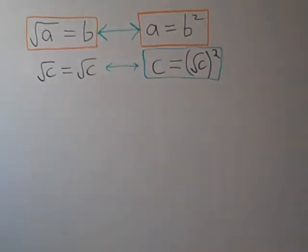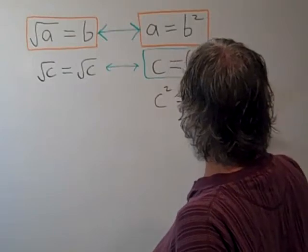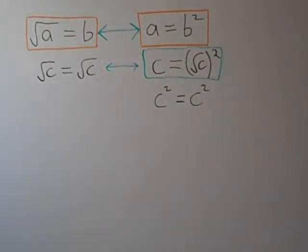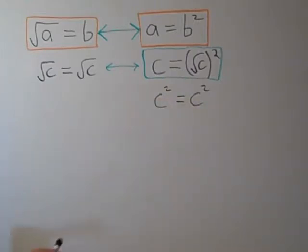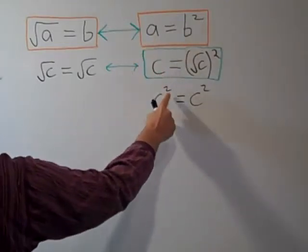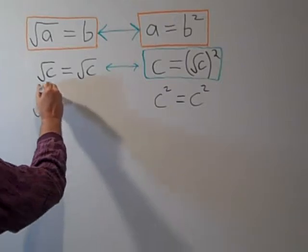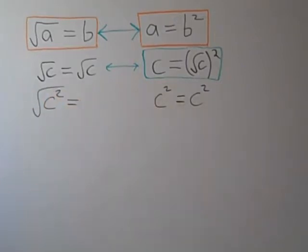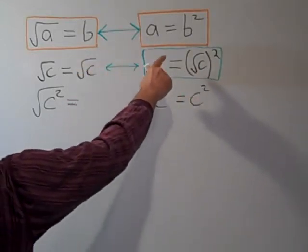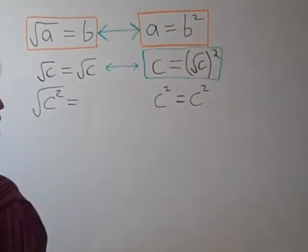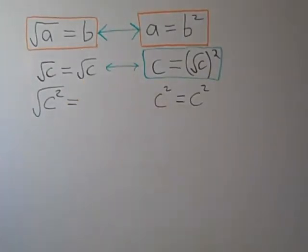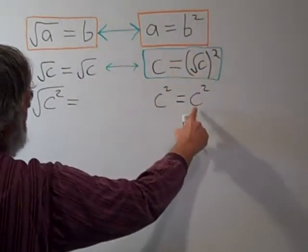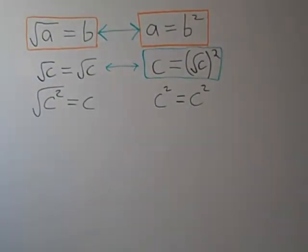Another interesting thing to look at: what if we wrote c squared is equal to c squared? Something that is clearly and obviously true. What does it look like in the land of radicals, over here in the square roots? We're following this pattern in orange up here. So a is equal to c squared, so the square root of a is the square root of c squared. Here, b is equal to c because b squared equals c squared. So the role of b is being played by c, and instead of b we can write c. We get another interesting and not at first obvious property of square roots.